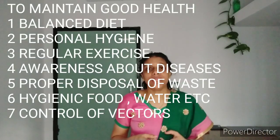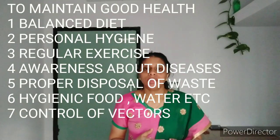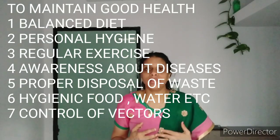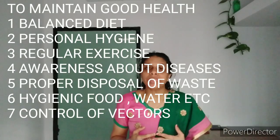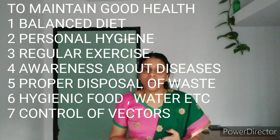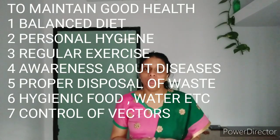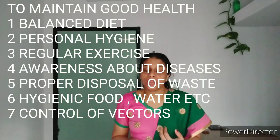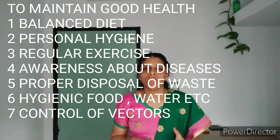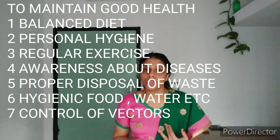How can we maintain good health? We can maintain good health by following certain things: first, a balanced diet — a diet containing all the essential nutrients in adequate amounts; second, personal hygiene; third, regular exercise; fourth, proper awareness about diseases and their effects; fifth, disposal of waste; sixth, control of vectors like mosquitoes and houseflies; and above all, taking proper hygienic food and water.